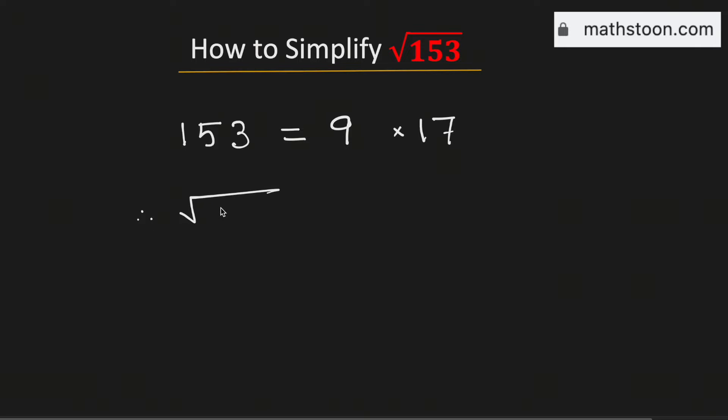So, the square root of 153 will be equal to square root of 9 times 17. Now using the rule of square roots, this can be broken up into square root of 9 times square root of 17.